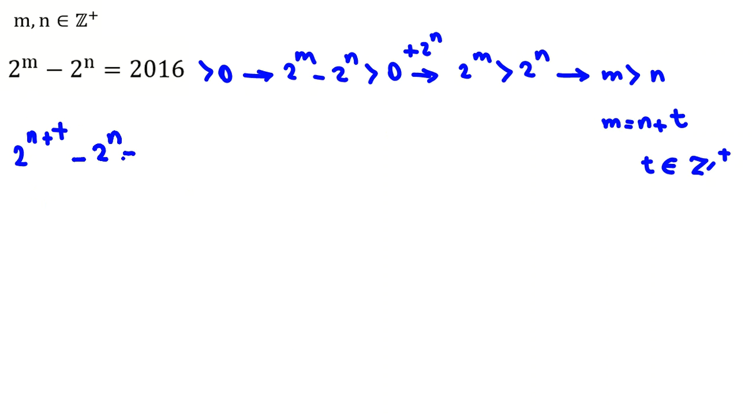If we use the power rule here, 2 to the n plus t equals 2 to the n times 2 to the t. So we have 2 to the n times 2 to the t minus 2 to the n equals 2016.